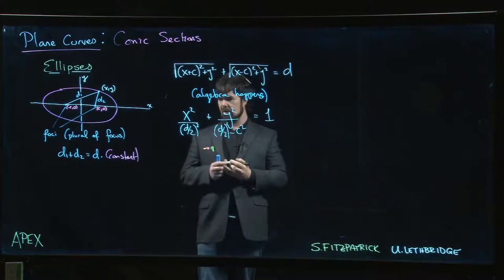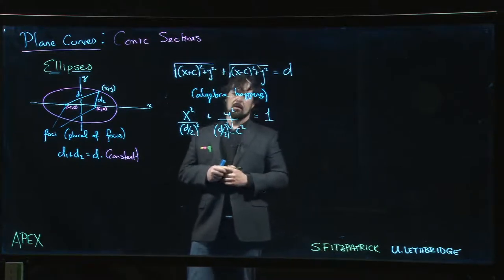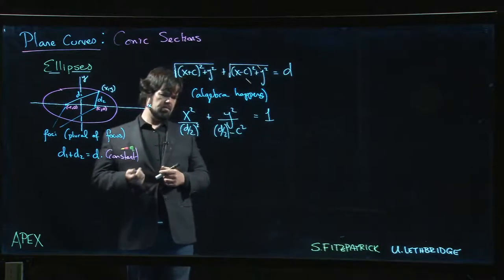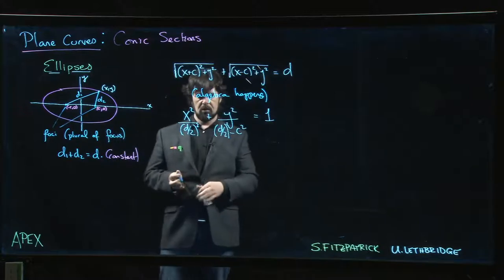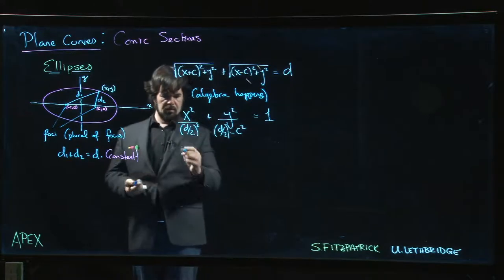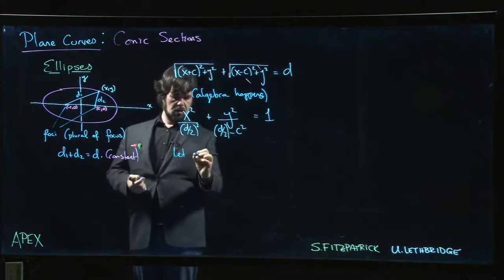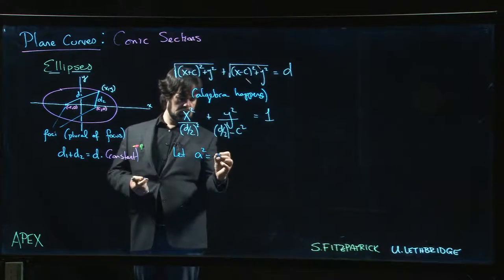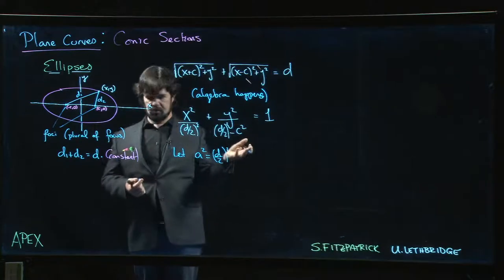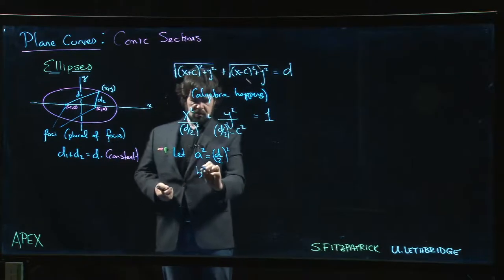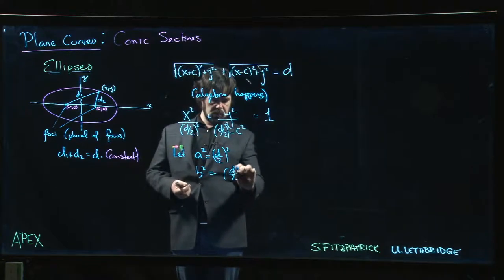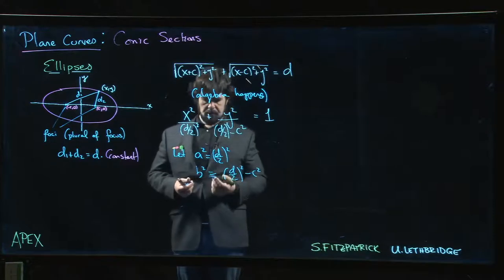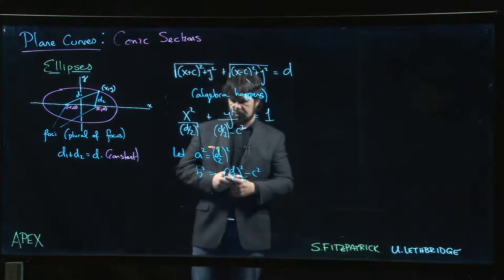Now that's fine. These are constants. This works out, but actually you can put this into a slightly better form. So what we do is we let a² equal to (d/2)². So essentially a is d/2. We let b² equal to (d/2)² - c².